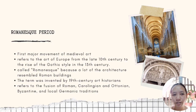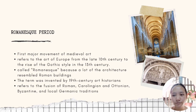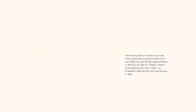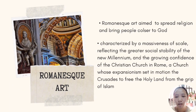However, the methods used to create a lot of the architecture were very different from the techniques used by the Romans. The term Romanesque was coined by 19th century art historians. It is a fusion of Roman, Carolingian, and Ottonian Byzantine and local Germanic traditions. The Romanesque style was also the first to spread across the whole of Catholic Europe, and thus the first pan-European style since imperial Roman architecture.